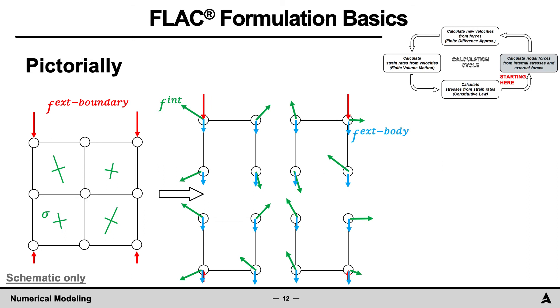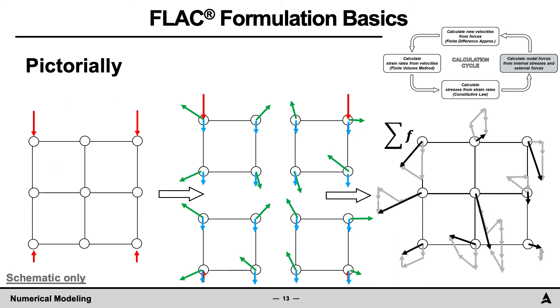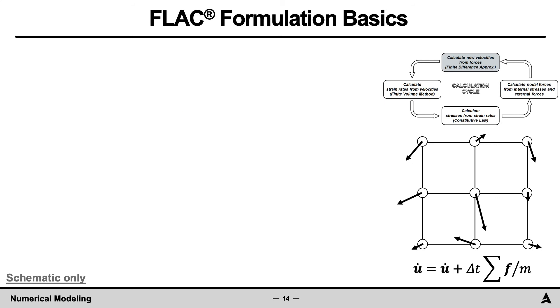Next, the elements are brought together and at each node, the force contributions are summed. This is highlighted by the vector sums here. The resultant force is shown in black. Non-zero resultant forces will cause the nodes to move, the calculation for which is calculated with f equals ma using the finite difference approximation.